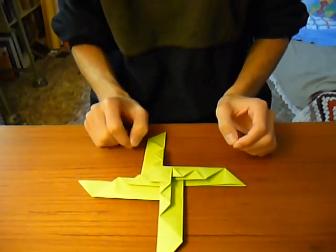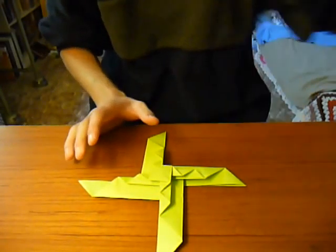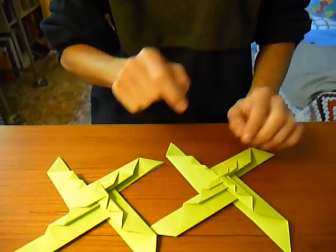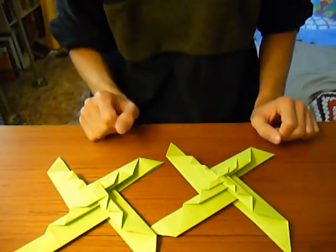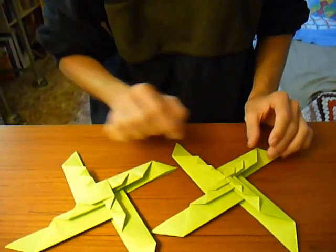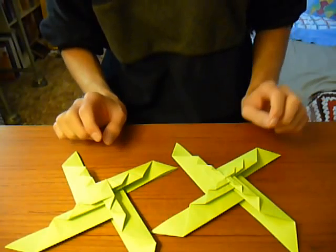Then do it a third time and you'll have a finished model. Although, of course, if you want to keep going, it's a fractal. So you can keep going as many times as your paper will allow. Although, most paper will stop. It will get too small to really do that effectively after the fourth or fifth level.